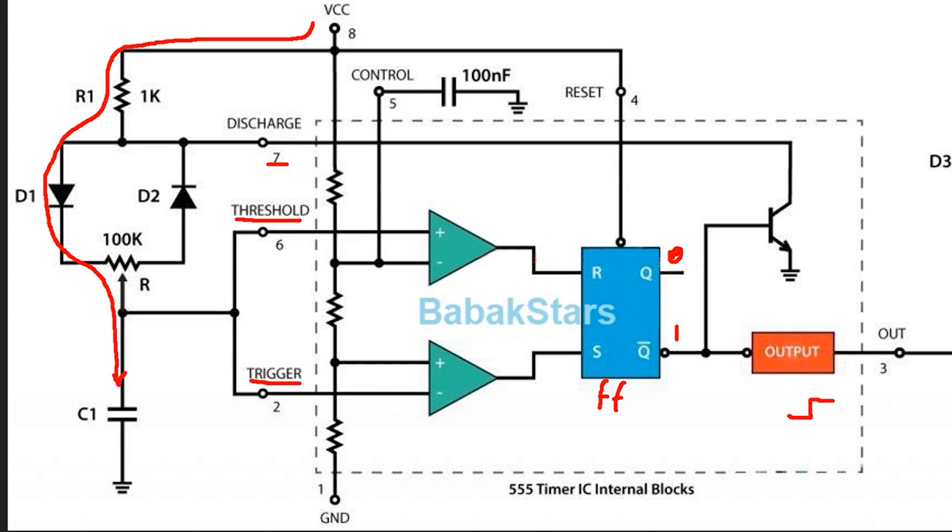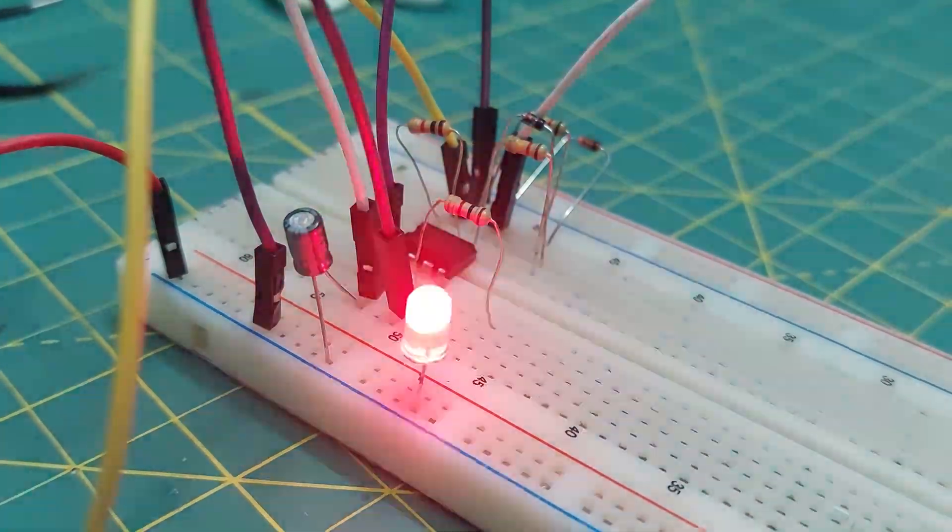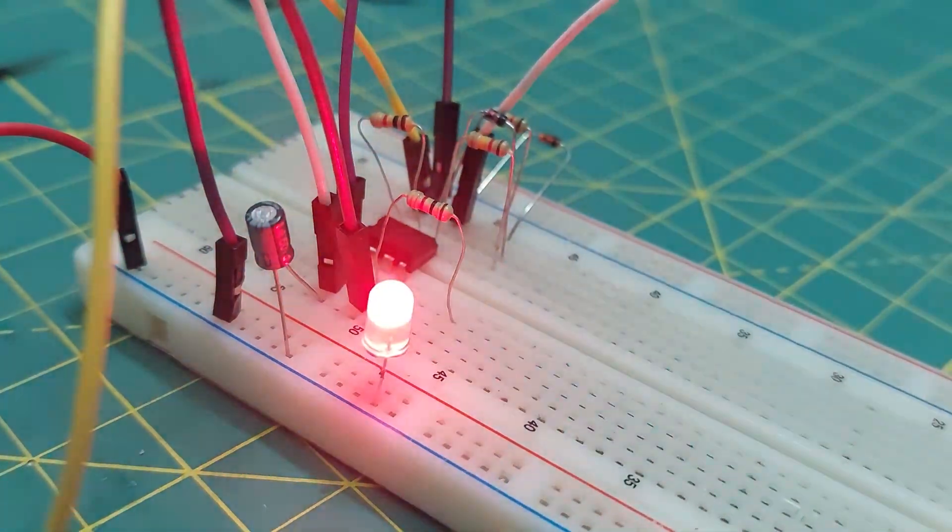Once the capacitor charges up to two-thirds of the supply voltage, the output switches to high and pin 7 gets grounded, allowing the capacitor to discharge, and the cycle continues. I've actually built this exact circuit so you can see it in action.